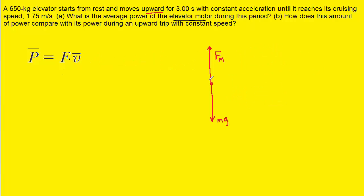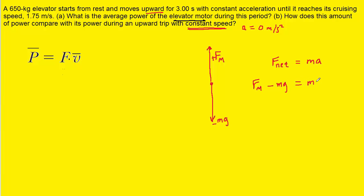Now on to part B. We can refer back to our free body diagram. In part B, the elevator is moving at constant speed, which means the acceleration is equal to 0 m/s². Looking at Newton's second law again — net force equals mass times acceleration — with fm minus mg on the left side, the right-hand side becomes mass times 0, which is 0.